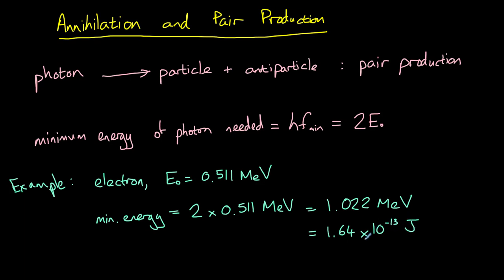So if we have a single photon with at least this energy, it is possible for it to form a positron-electron pair through pair production.